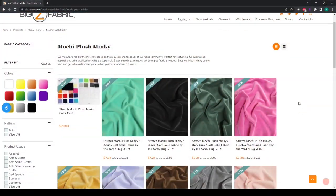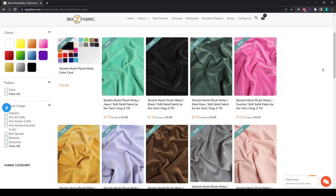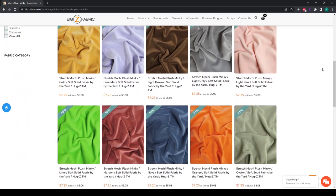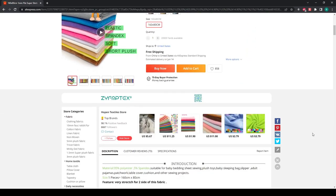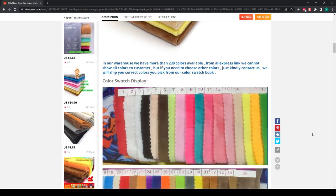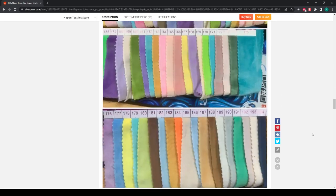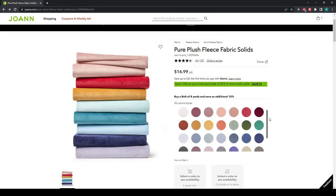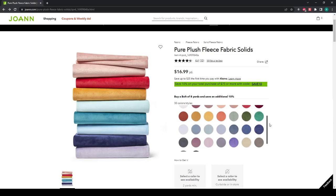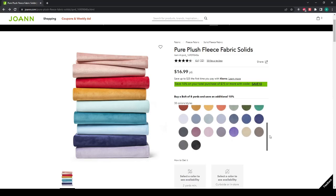Since I made that video, Big Z Fabric has started producing their own Mochi after a bunch of us requested it. But Hope and Textiles on AliExpress still has the most color options. Joann's has expanded their availability and the colors available, but it has the least amount of stretch out of the three options.